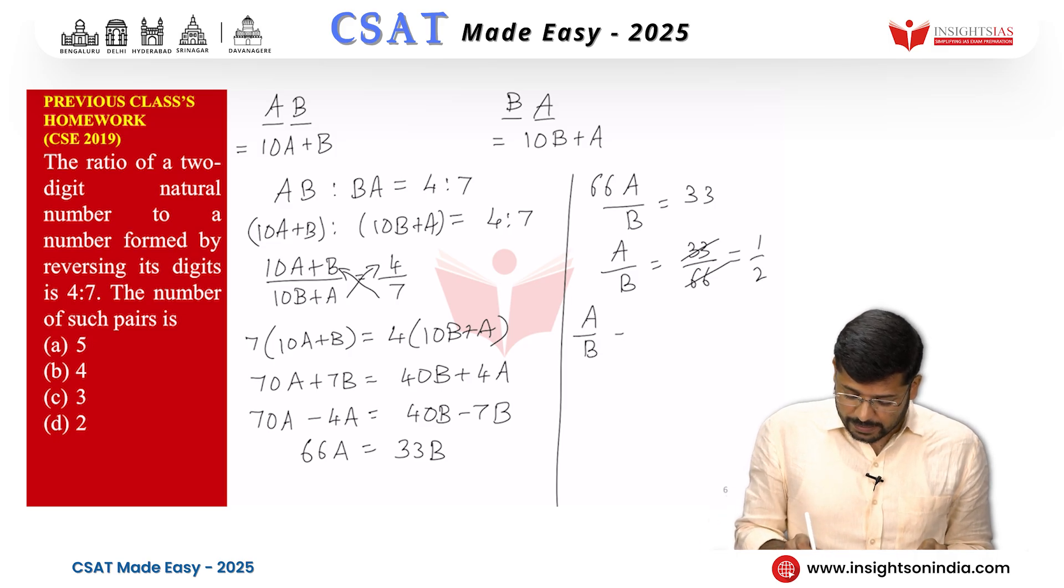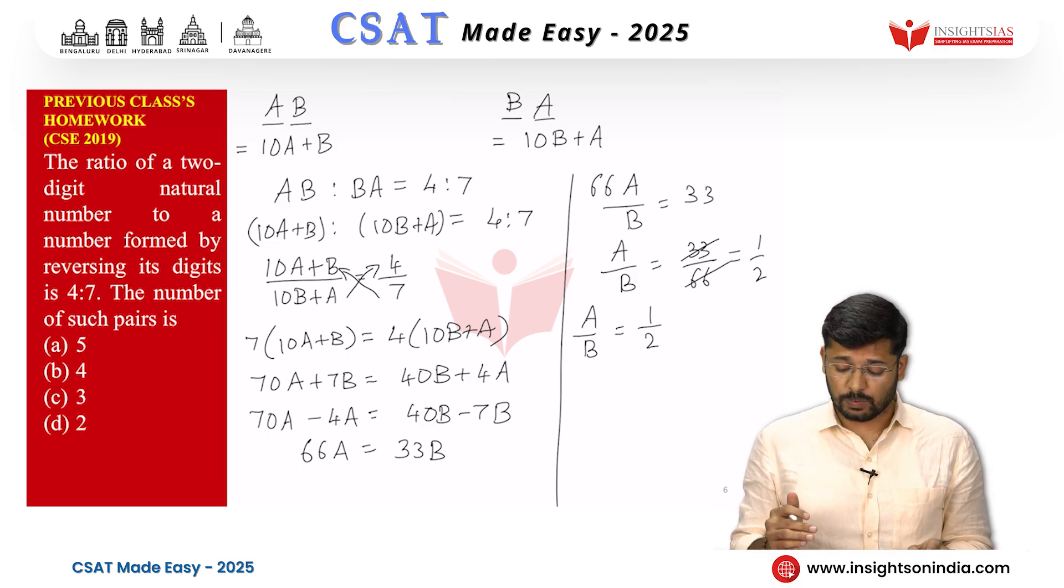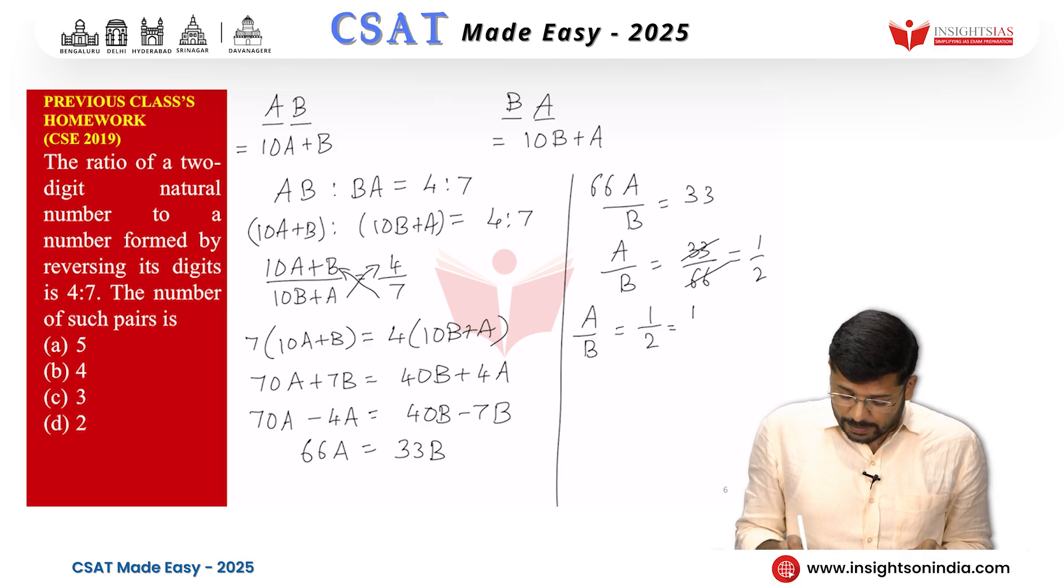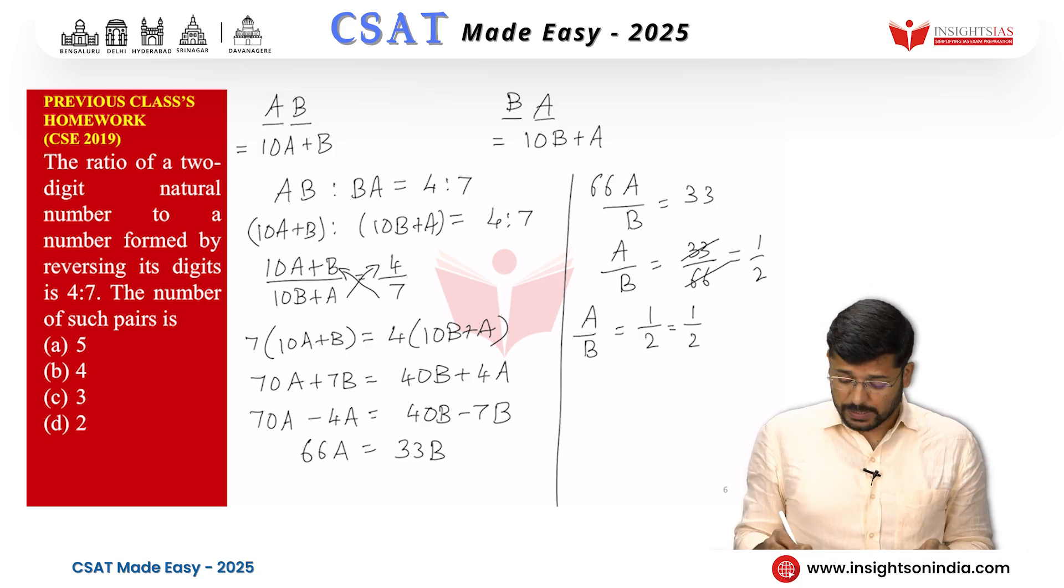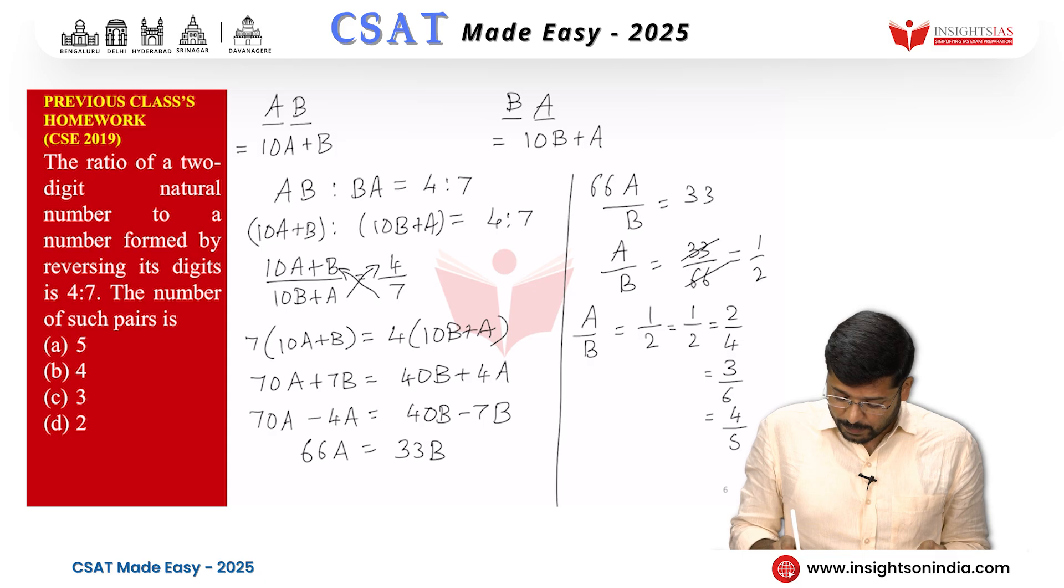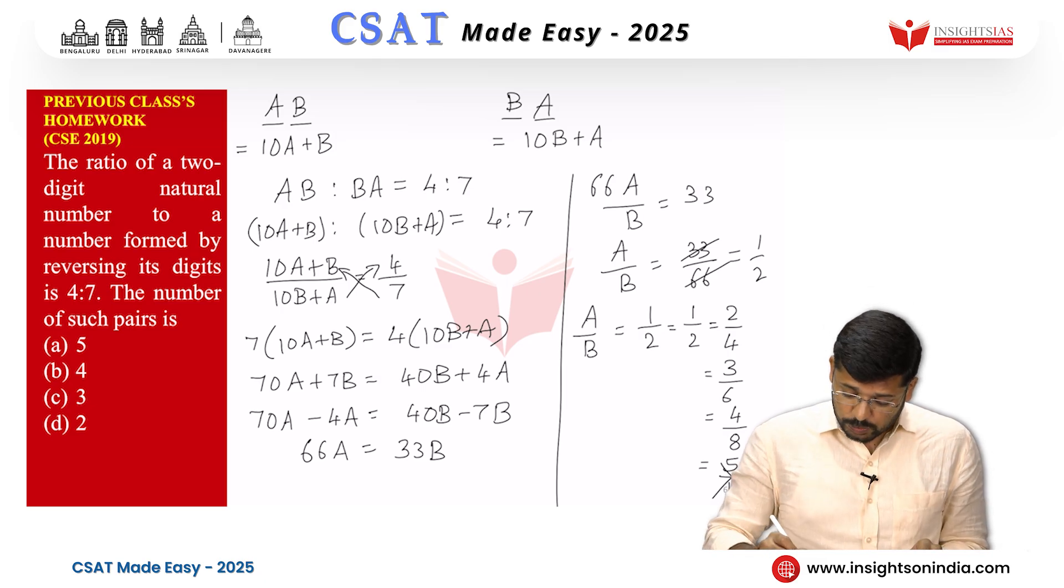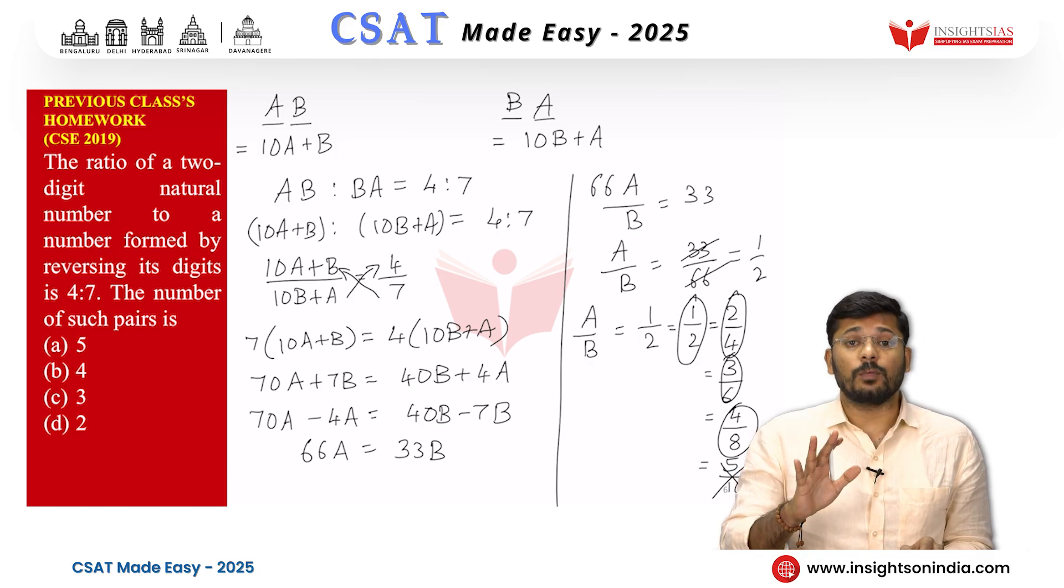So a and b, they are in the ratio 1 is to 2. Now how many possible digits do we have that follow this ratio? Let us see. a can be 1 and b can be 2. That is one possibility. Then a can be 2 and b can be 4. That is another possibility. Then a can be 3 and b can be 6. Another possibility. Then a can be 4 and b can be 8. Another possibility. But can we have 5 and 10? No. Because if we go for 5 and 10, 5 is a single digit, yes. But 10 is not a single digit. In our assumption b is a single digit. So how many possible pairs do we have? 1 by 2, 2 by 4, 3 by 6 and 4 by 8. So these 4 possible pairs are there.